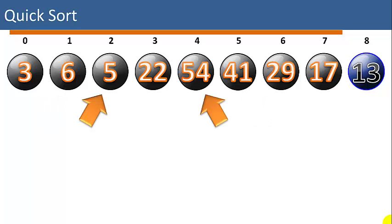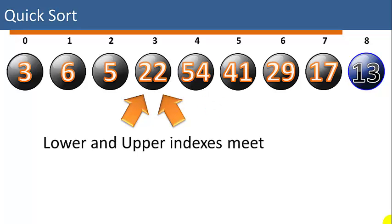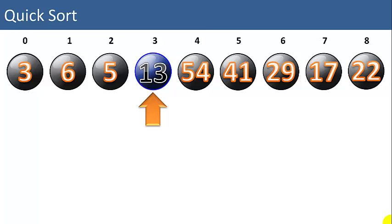We'll move both pointers towards the center. Is 5 greater than the pivot? No it is not. Is 22 greater than the pivot? Yes it is. Now from the right arrow we're looking for an item that is less than the pivot. Is 54 less than the pivot? No. Oh look, the two arrows have met in the middle. Now at this point we're done sorting using 13 as our pivot. So we're going to swap the 13 into place where the 22 is — where the two indexes met. Now we know that all the items to the left of 13 are smaller than 13, all the items to the right are larger than 13, and the 13 is in its correct position, position number 3.